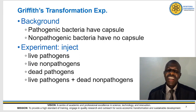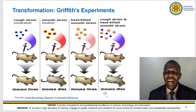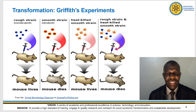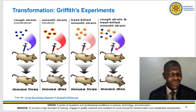The experiment involved injecting live pathogens, live non-pathogens, dead pathogens, and live pathogens plus dead non-pathogens. What happened is that for the rough strain, the mouse lived at the end of the day. For the smooth strain, the mouse died. For the heat-killed smooth strain, the mouse lived. And surprisingly, in the rough strain combined with the heat-killed smooth strain, the mouse died. This is a big foundation of our day-to-day understanding of transformation as a process of genetic transfer in bacteria.